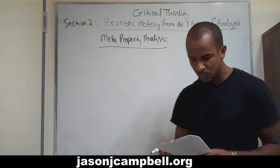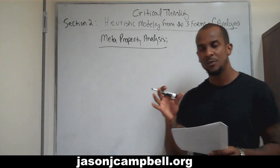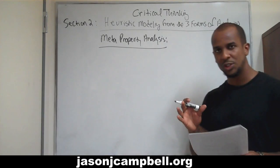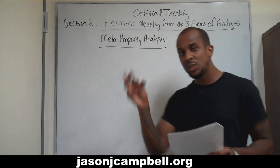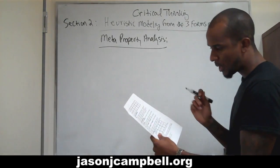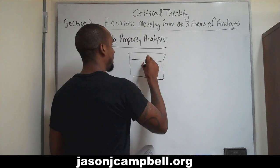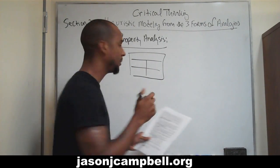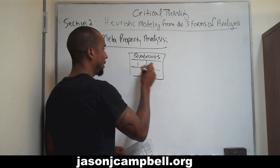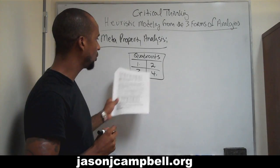We can talk about relationships not just of alpha's properties P1 through P4 in relation to beta's properties P1 through P4, but about properties of properties. On page five, meta-properties: I've broken this down into quadrants — quadrant one, quadrant two, quadrant three, quadrant four.